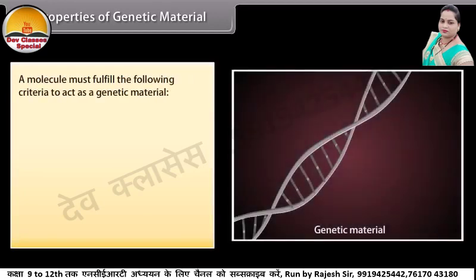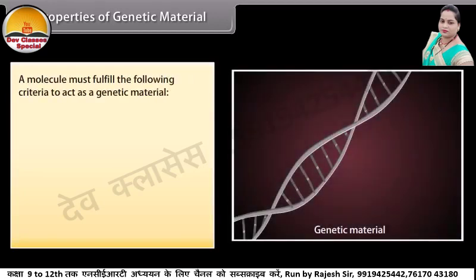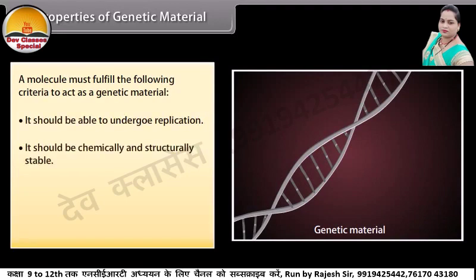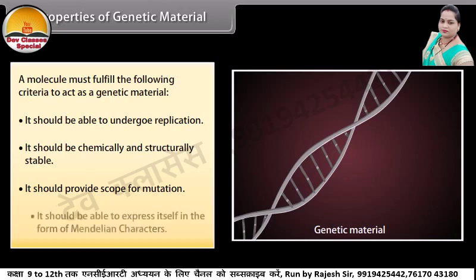A molecule must fulfill the following criteria to act as a genetic material: it should be able to undergo replication; it should be chemically and structurally stable; it should provide scope for mutation; and it should be able to express itself in the form of Mendelian characters.